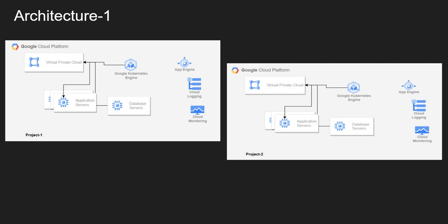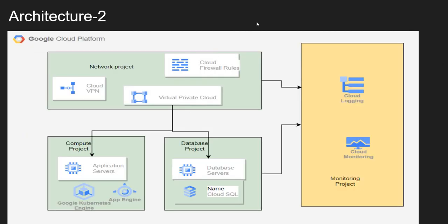So what is the best practice when creating the Google Cloud architecture for an organization? I will show you Architecture Two. Here, I am creating one project as a network project and creating all resources related to networking in that project — the VPC, the firewall rules, the VPN, and all network-related resources in the network project.